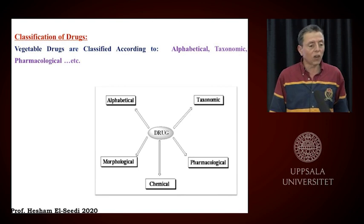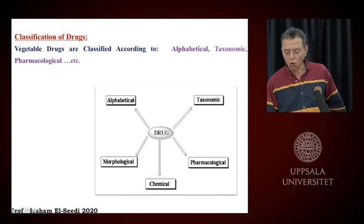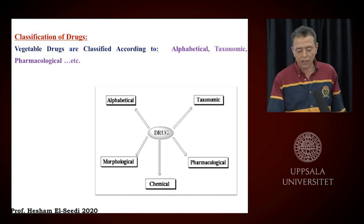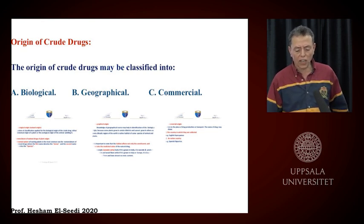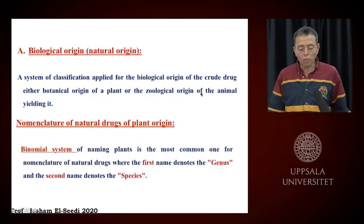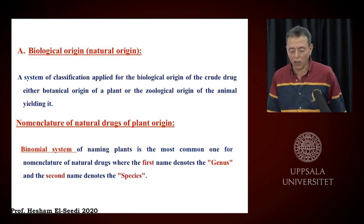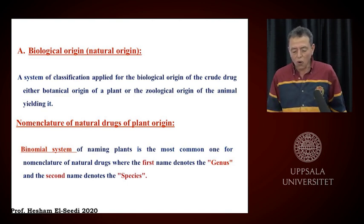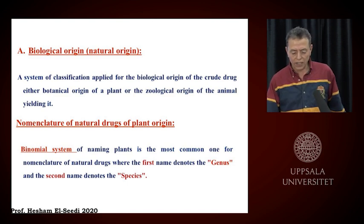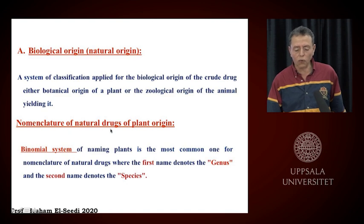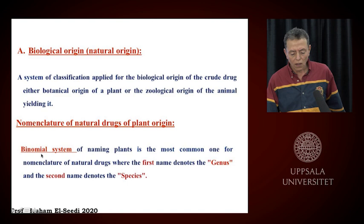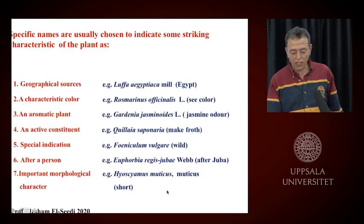Then we go to classification of drugs — how they classify drugs according to alphabetical, taxonomic, pharmacological, morphological, or chemical structure. What about the origin of drugs? It can be biological, geographical, or commercial. For biological origin, this is a system of classification applied for crude drugs — either botanical origin from plant material or zoological origin from animals. We have to know what is the origin of this material.